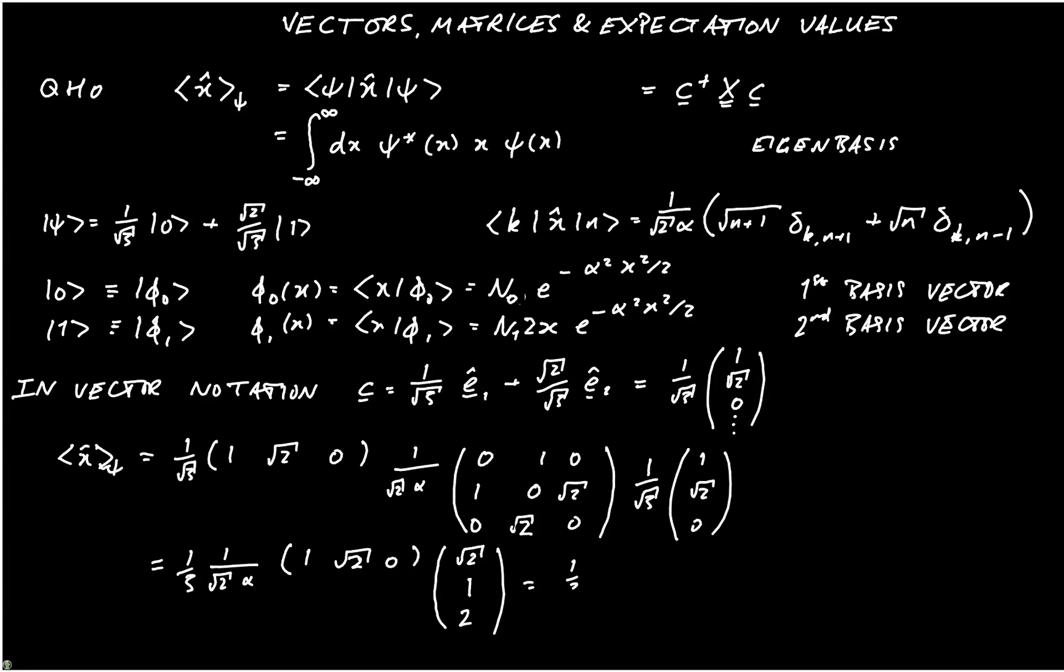And now if I multiply that out, I get 1 third multiplied by 1 over root 2 alpha, and now I have to evaluate this inner product. I've got root 2 plus root 2 plus 0. So overall, we get 2 root 2 over 3 multiplying 1 over root 2 alpha, or 2 over 3 alpha.